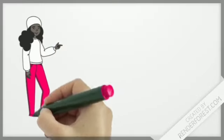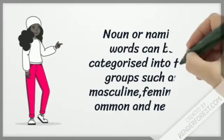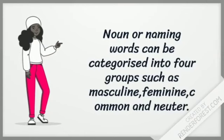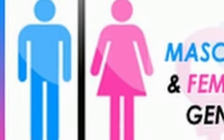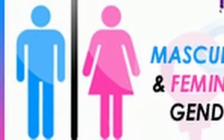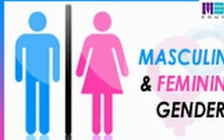Now it's grammar time. I am going to explain you gender. Nouns or naming words can be categorized into four groups such as masculine, feminine, common and neuter. Today, I am going to explain you masculine and feminine gender.